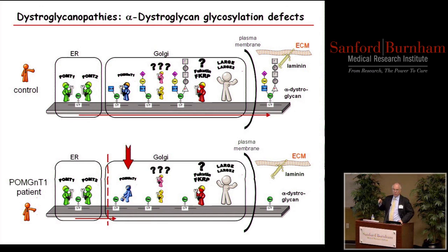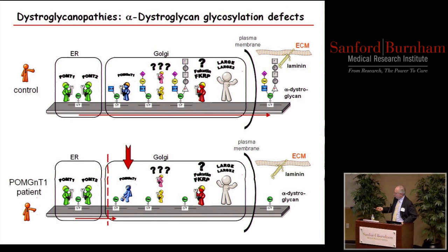One of the postdocs came up with a nice model for the processing of dystroglycan. In control muscle, POMT1 and POMT2 put on mannose, then you go through the Golgi where the rest of the enzymes decorate the dystroglycan molecule with sugars. The molecule is almost totally covered with sugars — probably only three small peptide regions free from sugar. The end product resides in the plasma membrane but binds laminin in the extracellular matrix, forming this link between the plasma membrane and the basement membrane. In patients with defects, POMGNT1 doesn't function correctly and you don't have the extensive glycosylation or this link into the extracellular matrix.